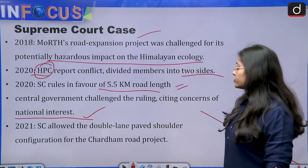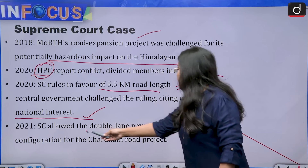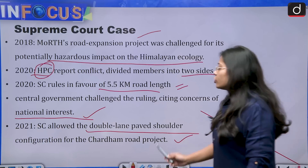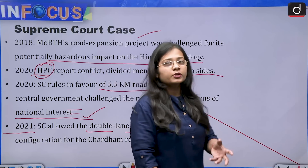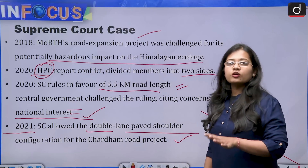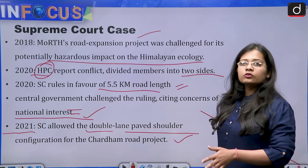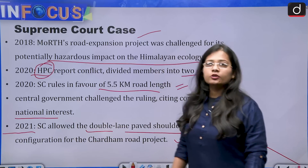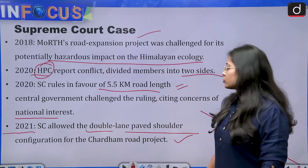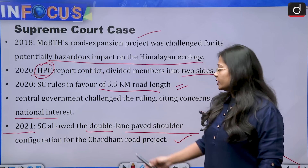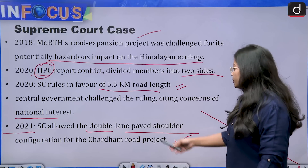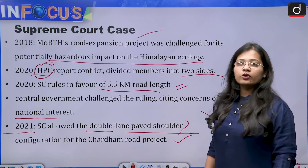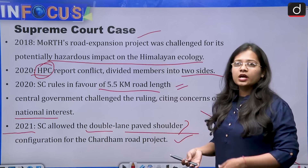In 2021, the Supreme Court allowed the double-lane paved shoulder configuration for the Char Dham road project, acknowledging that national interest is an important consideration that cannot be set aside. Taking all factors into consideration, the Supreme Court in 2021 permitted the construction of double-lane roads. This concludes the timeline of events related to the Char Dham Yatra project.